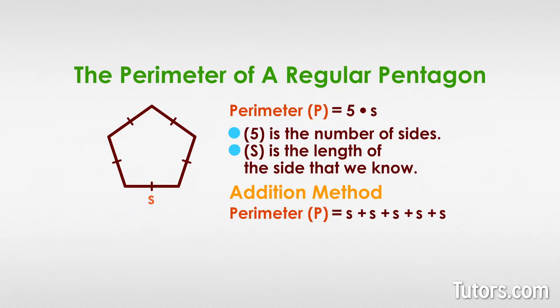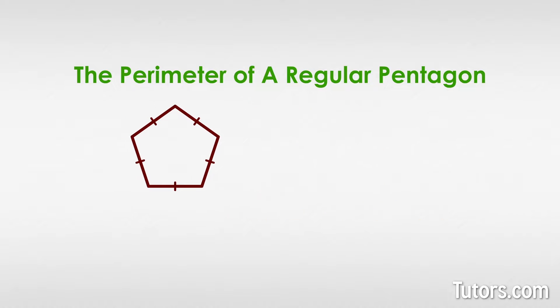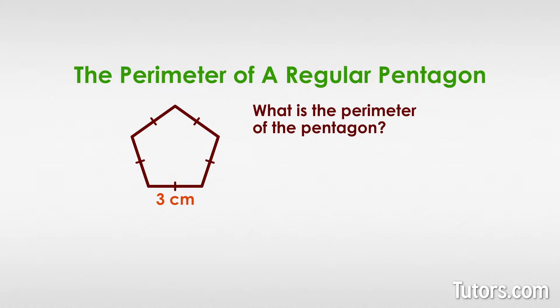Let's try an example. Here is a regular pentagon with one side labeled three centimeters. What is the perimeter of the pentagon? Since we know one side of a regular pentagon, we know the length of each side because the sides of a regular pentagon are all equal.